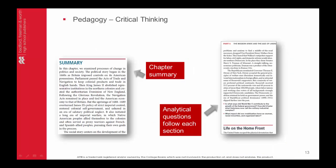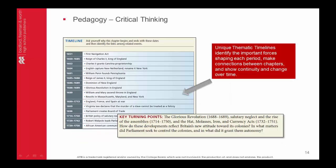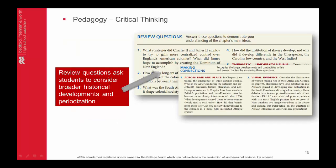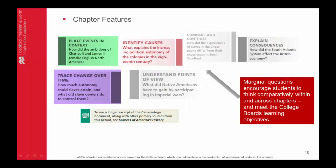Each chapter also contains a summary of the reading to help students process what they have just read. Additionally, after each section there is a set of analytical questions that keep students engaged and emphasize thinking critically about the text. Review questions at the end of each chapter ask students to consider broader historical developments and periodization. Marginal questions, such as 'place events in context' and 'understand points of view,' encourage students to think comparatively within and across chapters, meeting the College Board's learning objectives.